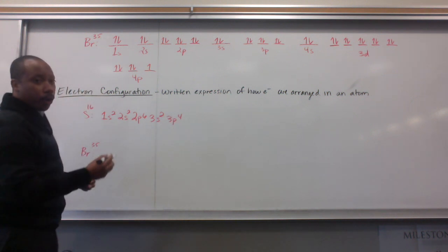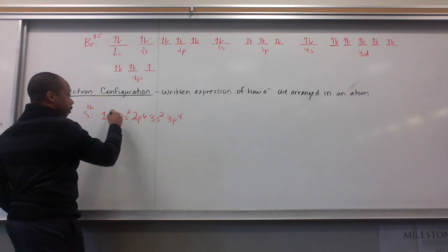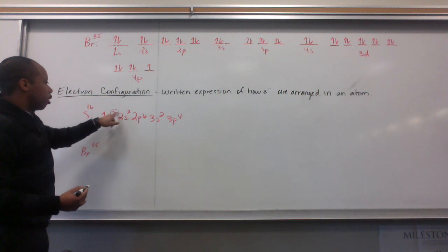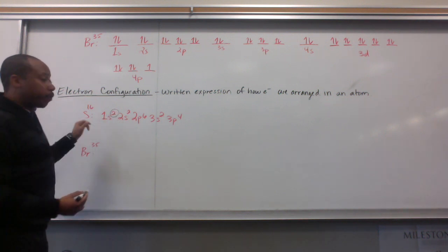So, instead of putting these arrows, we use superscripts. So, instead of 1s with 2 arrows, we use 1s superscript 2. This is for sulfur.